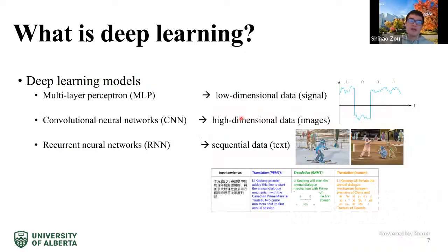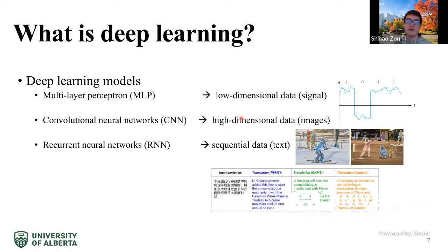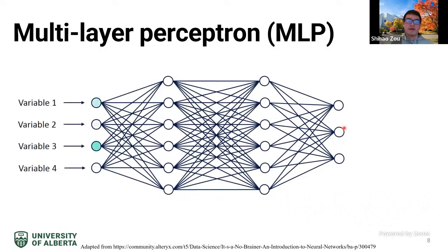In summary, deep learning includes three types of models: multi-layer perceptron, which processes low-dimensional data such as signal data; convolutional neural networks, which process high-dimensional data such as images; and recurrent neural networks, which process sequential data such as text and time series — especially data where order is very important.